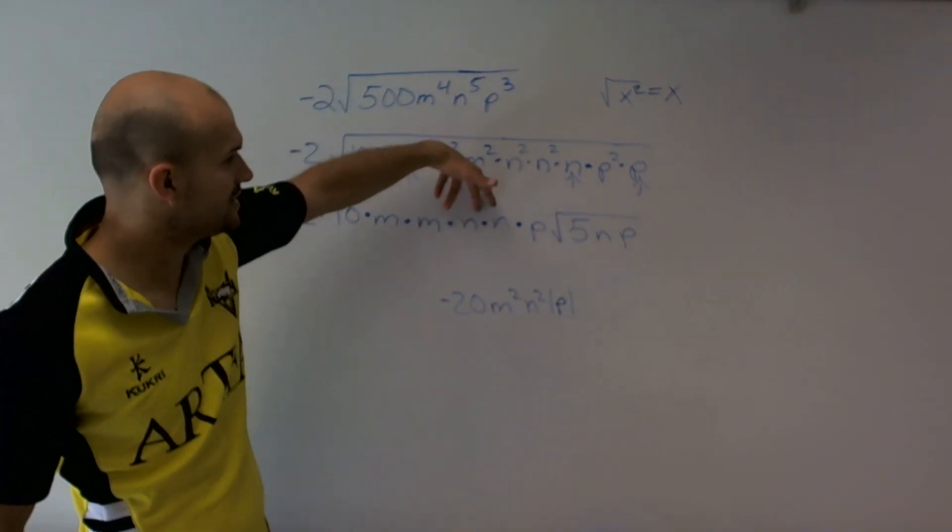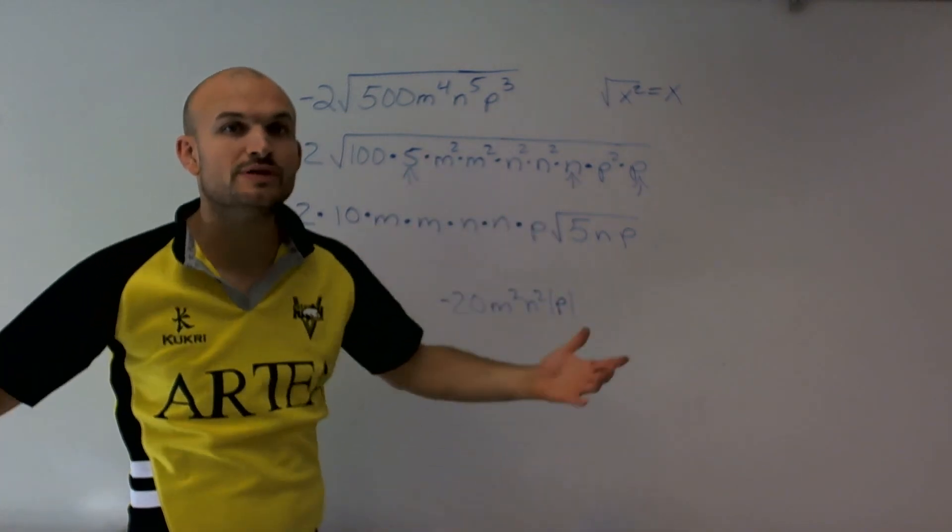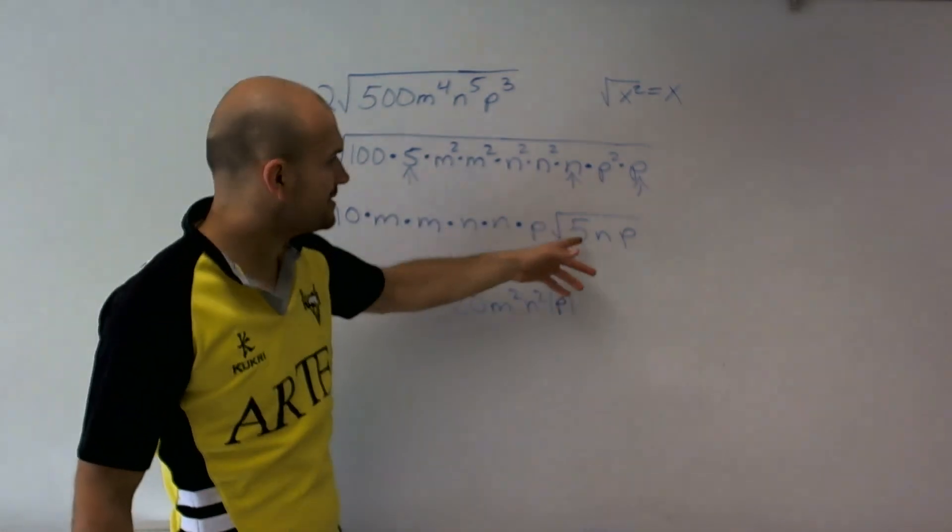So I want to represent the absolute value of it to ensure that it's going to be positive. If these are positive or negative, it would have been OK because n times n gives you n squared, which we know is going to be positive. But here, we need to represent it with the absolute value because it's just p by itself.